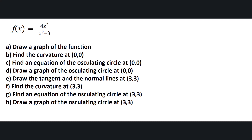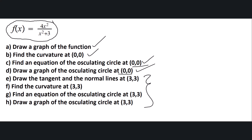We have to perform several tasks on this function. First, we have to draw a graph, then find the curvature equation of the osculating circle at (0,0) and draw a graph of the osculating circle at (0,0). Then we have to repeat the process at (3,3), which is a point lying on the graph of this function. Let's start with that.